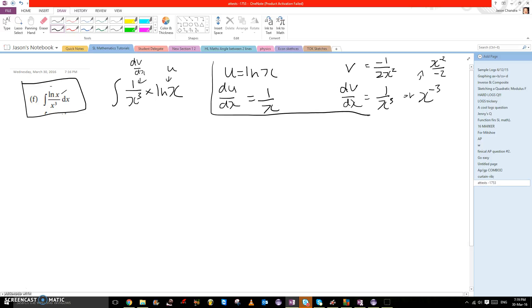Once we have these, we can use the formula uv minus integral of v du/dx, all with respect to dx. This gives us minus ln x times 1 over 2x squared minus the integral of v, which is minus 1 over 2x squared, times du/dx, which is 1 over x.